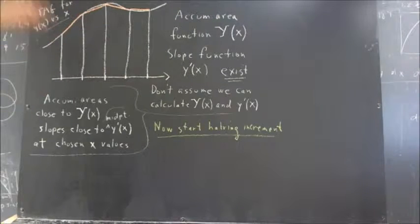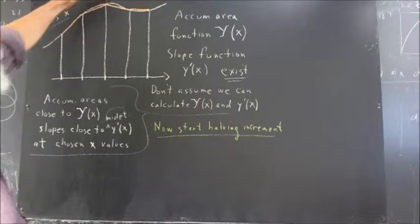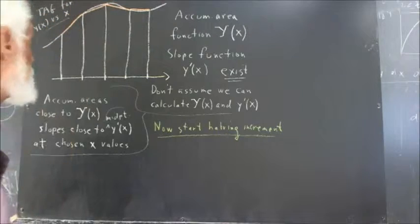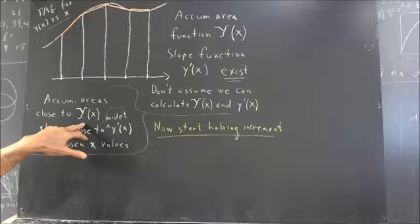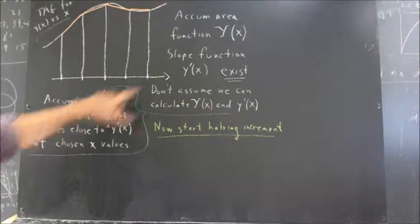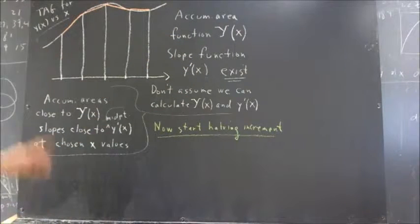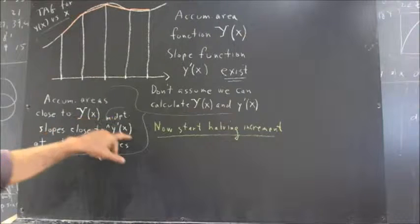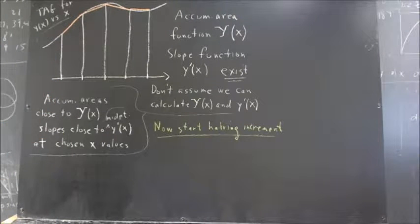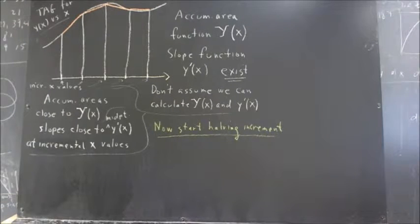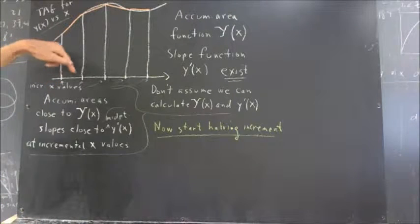So we've got a graph, and I've got a trapezoidal approximation — attempted to draw a trapezoidal approximation. These lines stay fairly close to the curve, but there are some real discrepancies. Still, we can say that the accumulated areas will be close to the accumulated area function Y of x. And the slopes will be close to the midpoint value of y prime of x at the incremental x values.